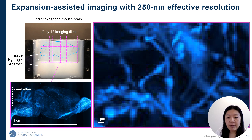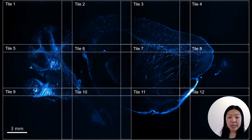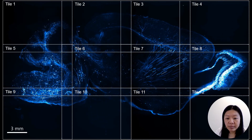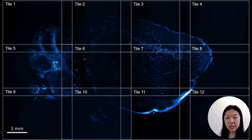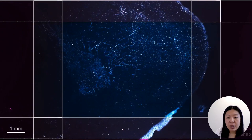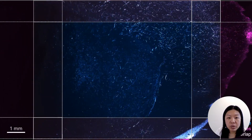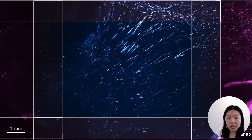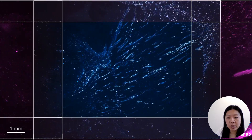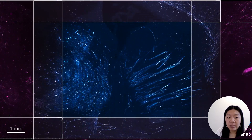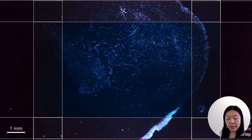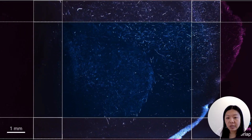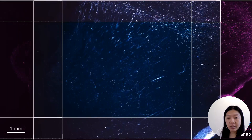Considering the expansion factor of the brain is about 4x, the effective resolution of the system is about 250 nm. In another example, a video moves along the Z-direction for all 12 tiles stitched together. Within the zoomed-in view, we can see the registration between adjacent tiles is very good. This is another advantage of ExaSPIM: shorter imaging time leads to less tissue distortion, and the reduced number of tiles reduces the amount of work for registration. Even with naive registration based on stage coordinates, the result already looks very good.